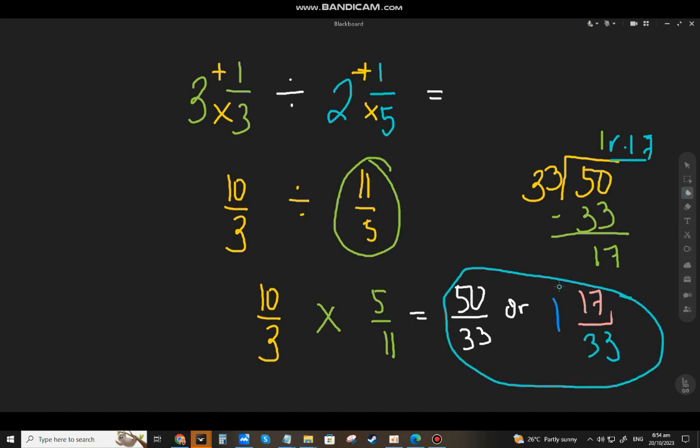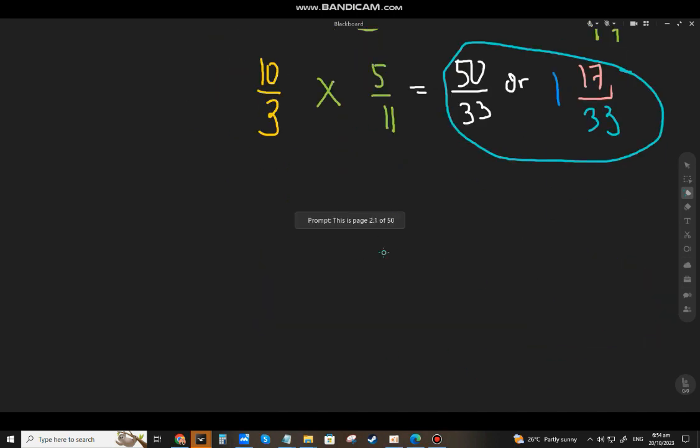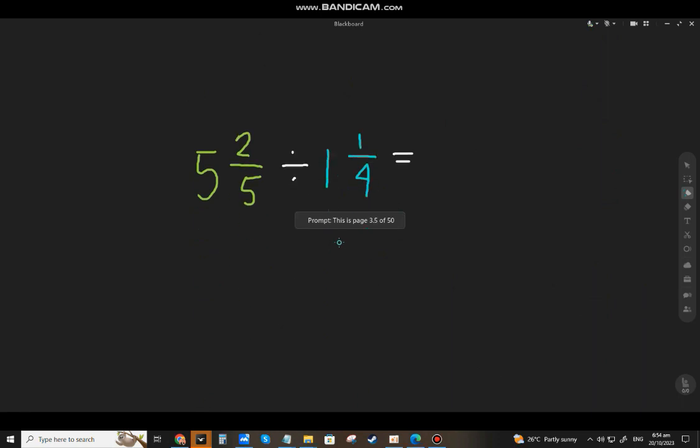Let's have the last example. 5 and two-fifths divided by 1 and one-fourth. 5 times 5, that will be 25 plus 2, that will be 27 over 5. 4 times 1 plus 1, that will be 5 over 4.